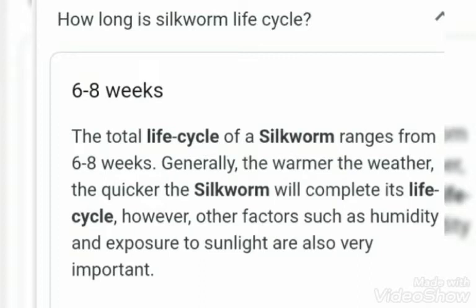How long is a silkworm's life cycle? The total life cycle of a silkworm ranges from 6 to 8 weeks. Generally, the warmer the weather, the quicker the silkworm will complete its life cycle. In warm weather, they eat mulberry leaves very well, as these leaves are available in warm weather, and can make the cocoon more easily. However, other factors such as humidity and exposure to sunlight are also very important.